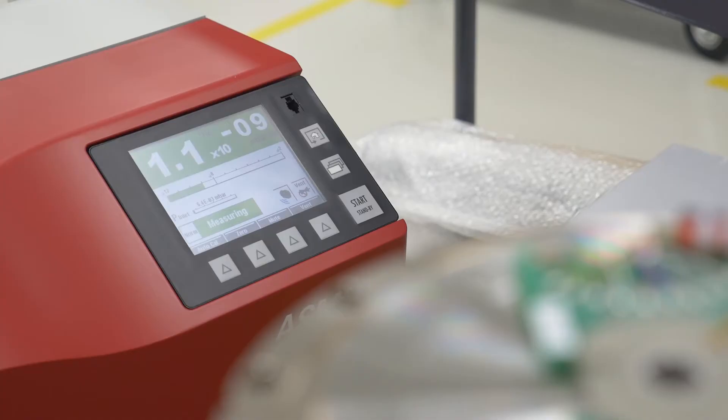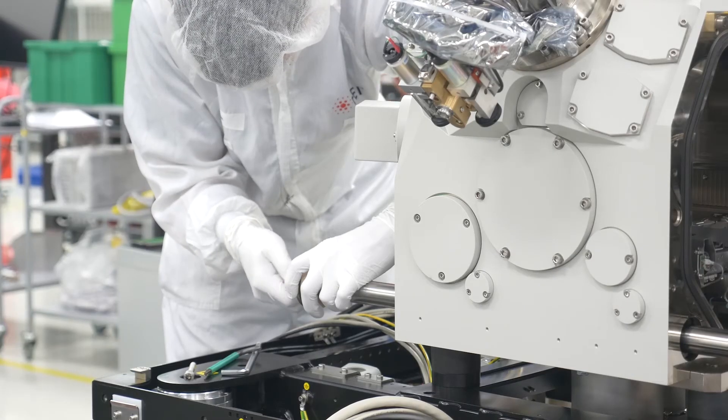If the detector does not discover the presence of helium in the system, they know in FEI that the part is perfectly tight and they can move to another phase of production.